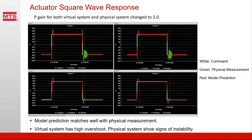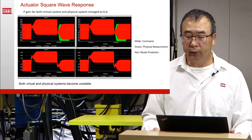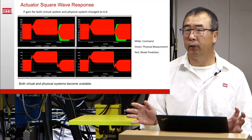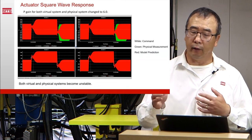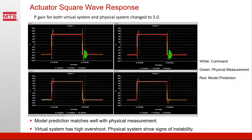We then changed the P gains for both systems to five. Both the virtual and physical systems show a high level of overshoot, and for actuators number one and two on the physical system it shows some levels of instability — the physical side is on the verge of instability. The virtual side and physical side matched fairly well. We then increased the P gain further to six for both systems, and right away both the virtual and physical systems became unstable. So from this example you can see our virtual testing system is quite accurate — it can not only predict the response, but also predict instability issues.